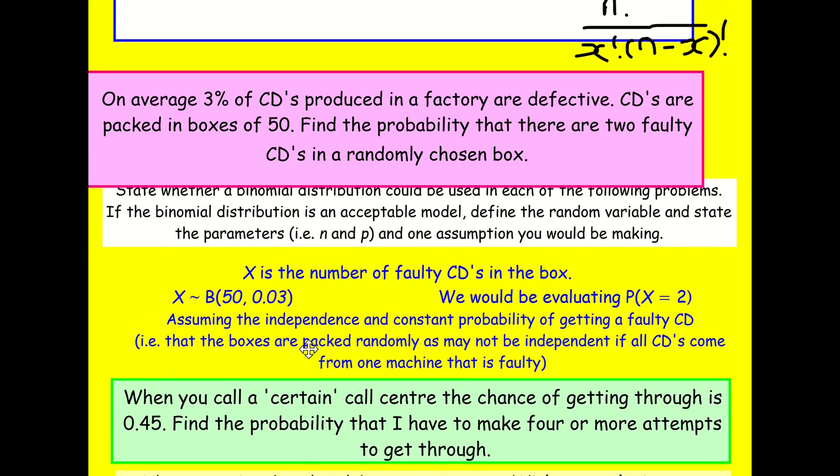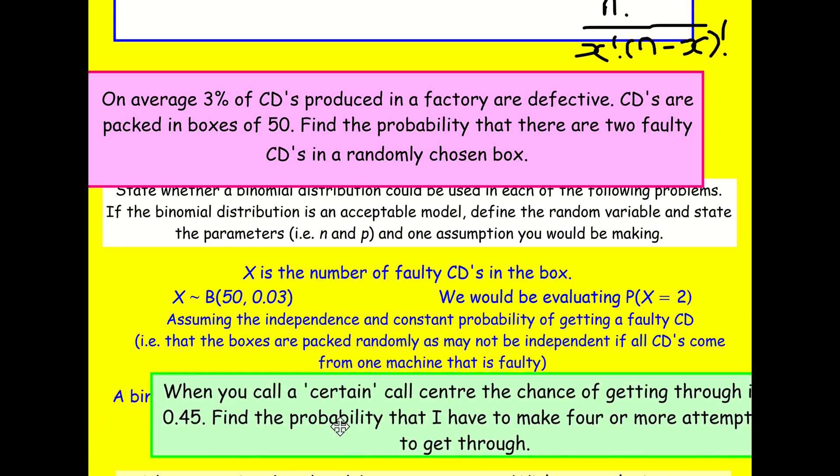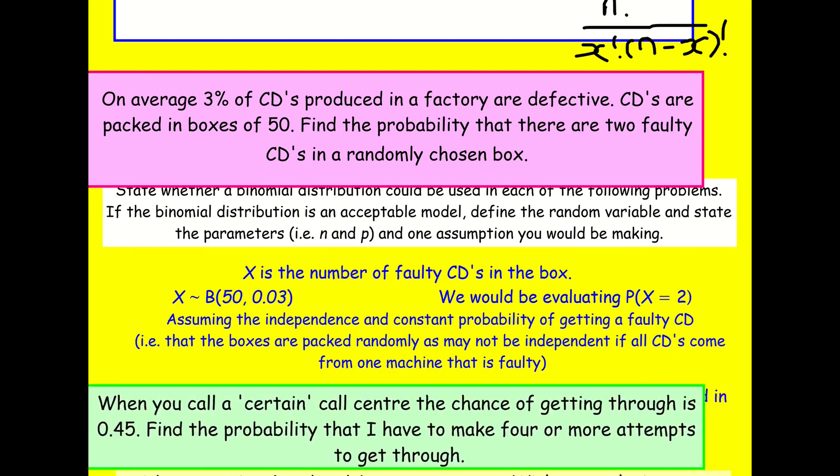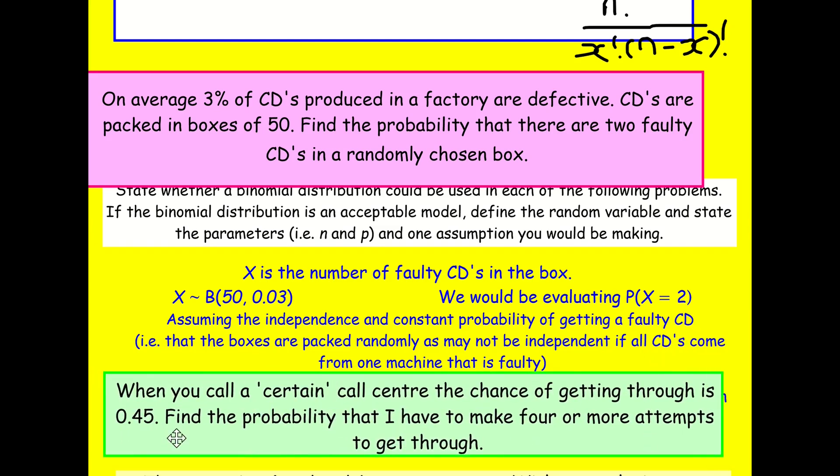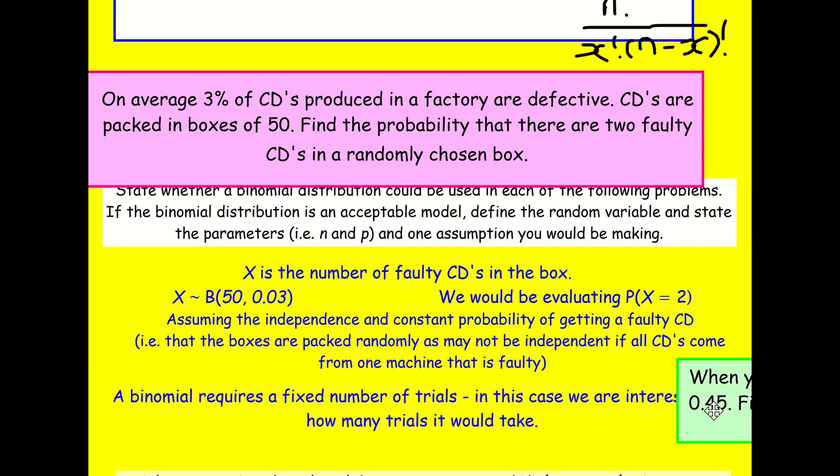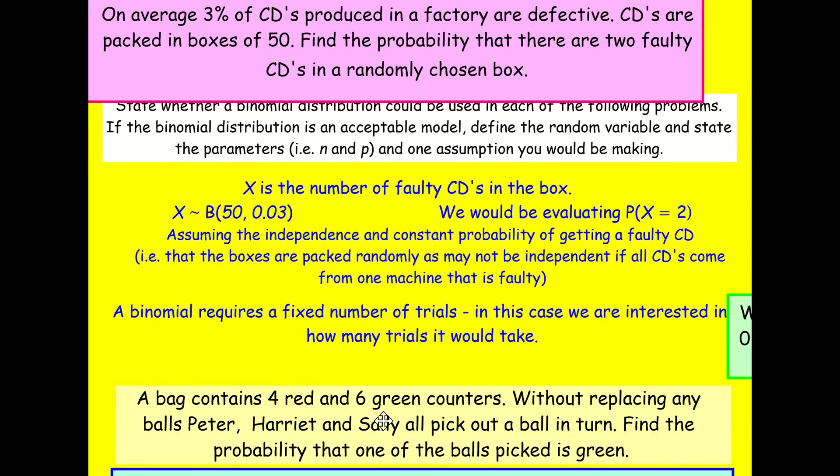What about this next one? About call centers. The probability of getting through is 0.5. Find the probability I have to make four or more attempts to get through. Actually, we don't have a fixed number of trials here. We just keep calling until we get through, basically. And we're interested in if it makes four or more attempts. So we fail on that first one. And that's actually a geometric distribution. We're actually interested in the number of trials it would take rather than looking at the number of successes from a fixed number of trials.